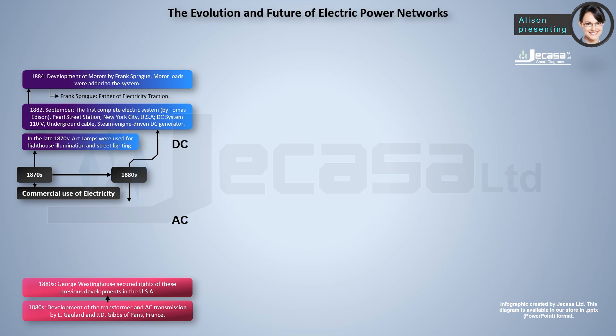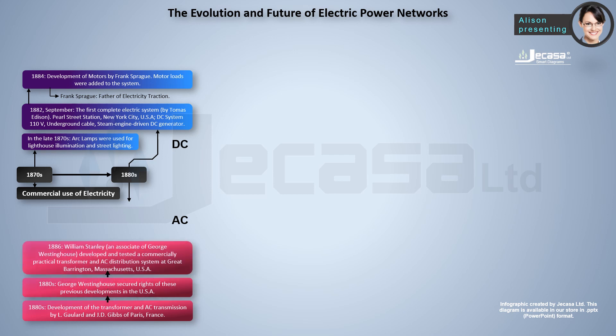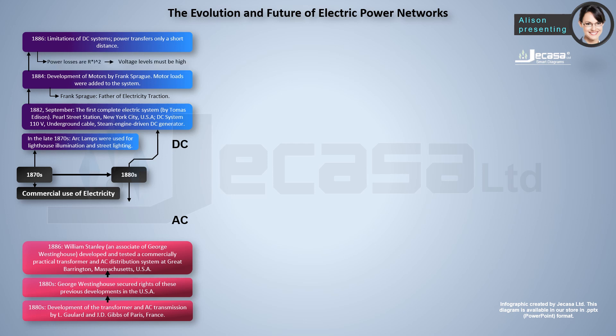In 1886, William Stanley, an associate of George Westinghouse, developed and tested a commercially practical transformer and AC distribution system at Great Barrington, Massachusetts, USA. Also in 1886, limitations of DC systems became apparent: power could only be transferred short distances, since electrical energy losses are dependent on resistance times the square of the current. The voltage level must be high to minimize losses, and DC voltage levels had not developed enough to transmit electric power over long distances at that time.